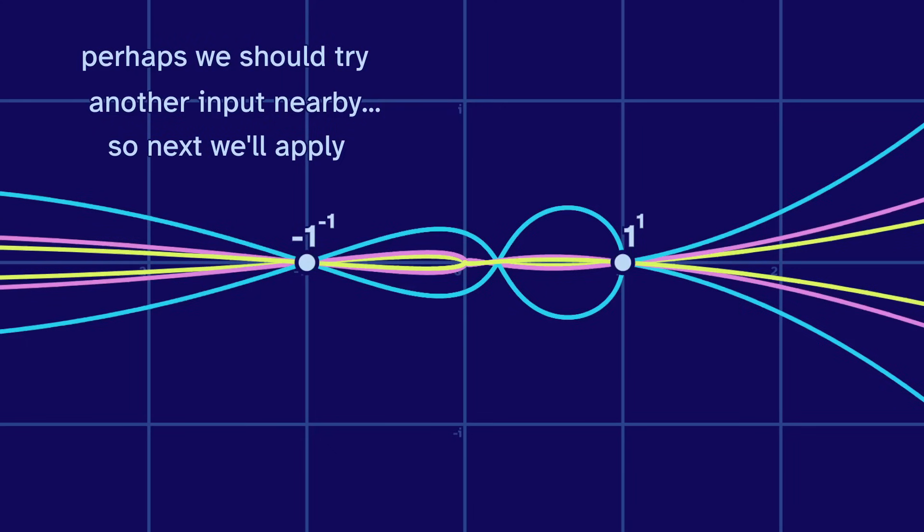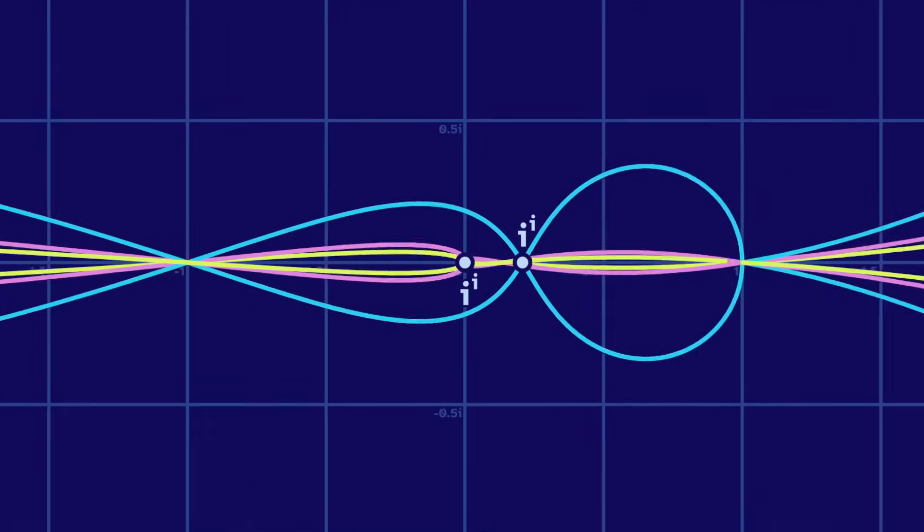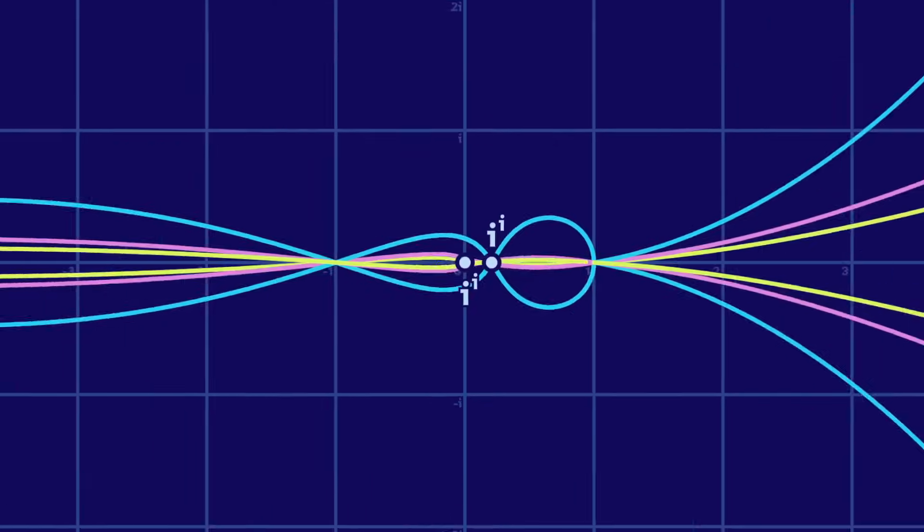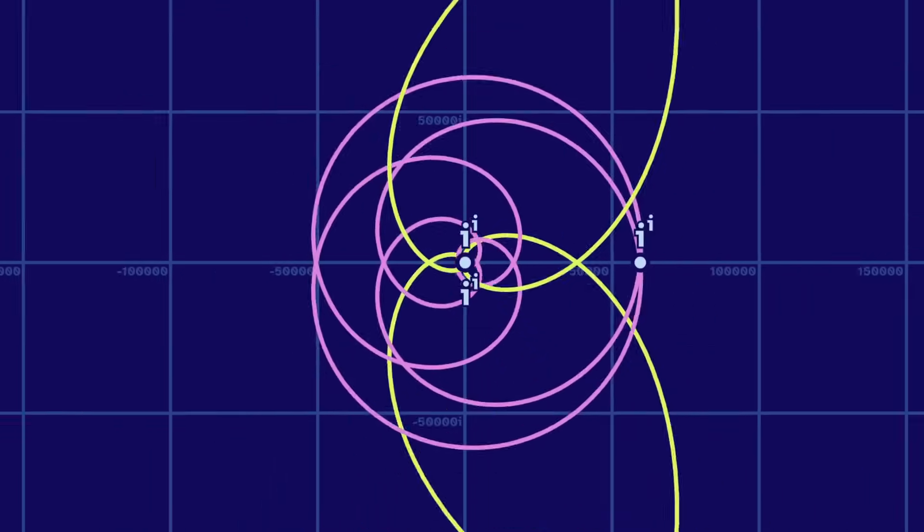So next, we'll apply this function to the square root of negative 1. Some of the outputs are close to 0, and some are very far. But we notice they're all on the real axis. What's going on there?